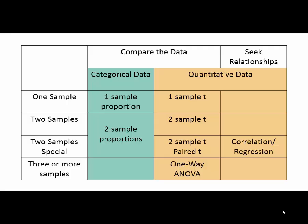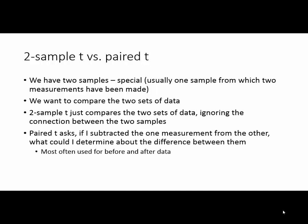There's still one block with two possible tests: a two-sample t-test versus a paired t-test. We have quantitative data and two samples special — most likely one sample of people with two measurements of the same kind, like two body weights or two systolic blood pressures. We want to compare the data sets, but the question is: do we just want to know if they're the same or not, or are we asking how they changed — how big a difference are we talking about? A two-sample t-test ignores any connection between the two samples and treats them like any two completely separate sets of data.